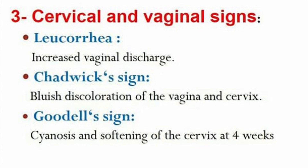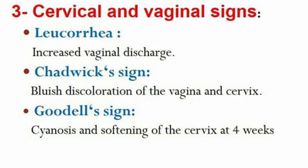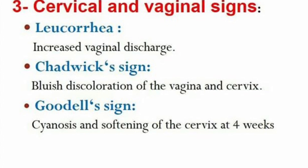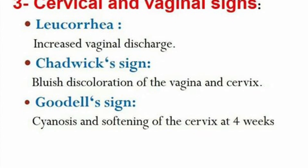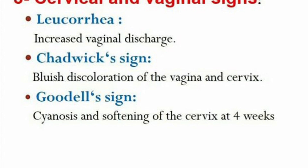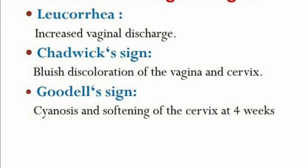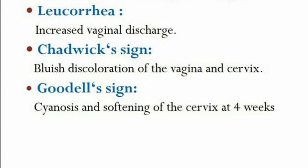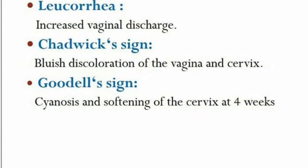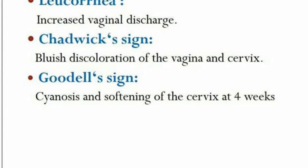Number three on the list of signs is cervical and vaginal signs. There is an increase in vaginal discharge known as leucorrhea, a bluish discoloration of the vagina and cervix known as Chadwick's sign, and softening of the cervix at four weeks known as Goodell's sign.